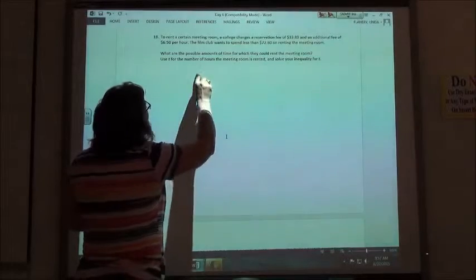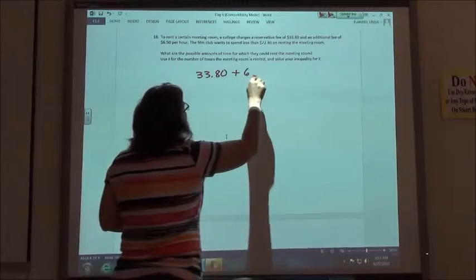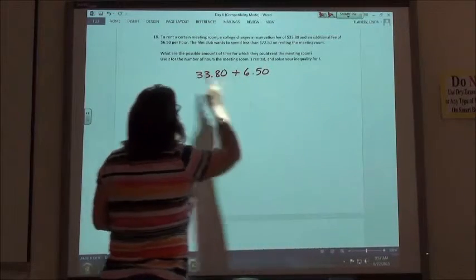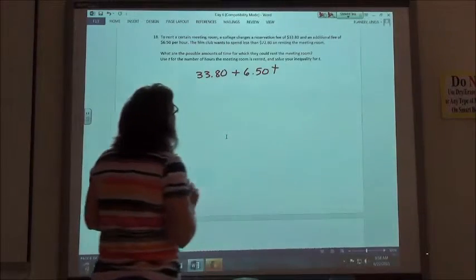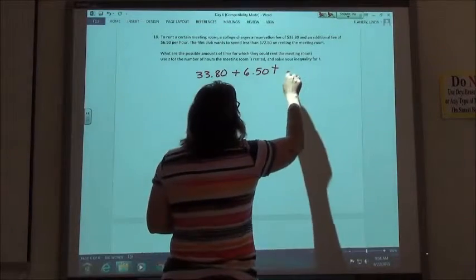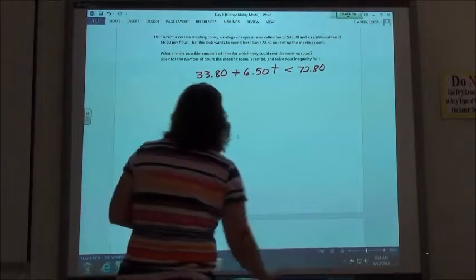So reservation fee of $33.80, an additional fee of $6.50 per hour. Make sure you use T for the number of hours because they tell you to use T, and they want to spend less than $72.80. So we have our inequality.